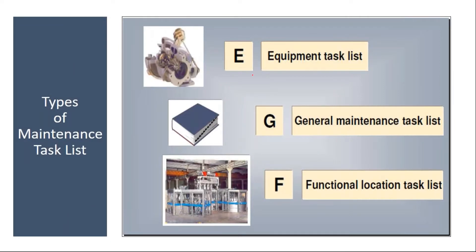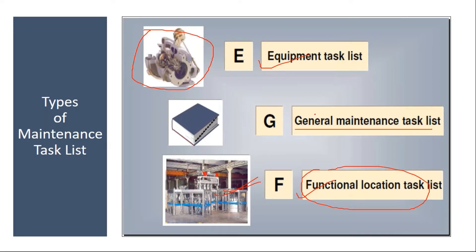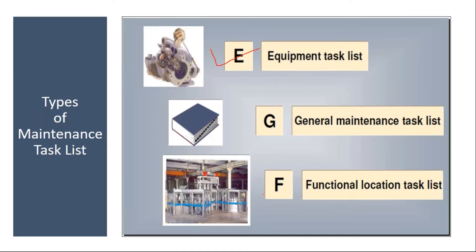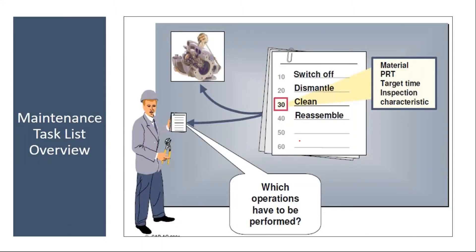We have three types of task lists. First, equipment task list — you can create a task list for a specific equipment. Second, functional location task list — you can create a task list for a functional location. Third, general maintenance task list — a common task list that does not refer to any equipment or functional location. In the task list, you maintain the operations in sequential manner, like switch off, dismantle, clean, reassemble.